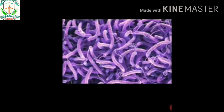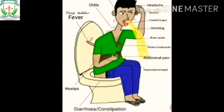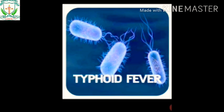Cholera is caused by the bacteria Vibrio cholerae, and its mode of transmission is water or food. Typhoid is caused by the bacteria Salmonella typhi. Preventive measures include maintaining personal hygiene and good sanitary habits, consuming properly cooked food and boiled drinking water, and getting vaccination.